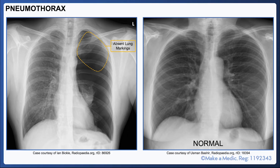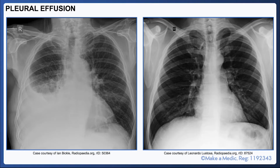You should not normally be able to see the pleural edge as it is closely tethered to the chest wall. However, in this case you can see a very clear pleural edge. Compare this to the normal chest X-ray on the right, where you can see lung markings throughout both lung fields.